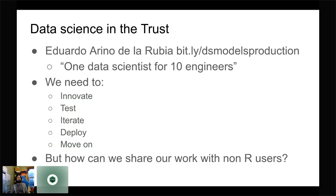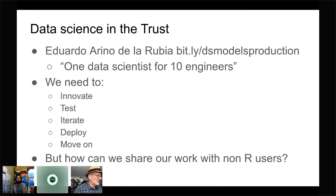I watched a talk from RStudio conference by Eduardo Arena de la Rubia that was very influential for me — I'd recommend it, I'll put a shortened link on the slide. One of the things he talks about is there being one data scientist for 10 engineers, which is roughly true in my context. He discusses how small data science teams can maximize the value they deliver: be innovative, test things, iterate, and then move on. The problem I've faced is how to share the work we've done with non-R users.